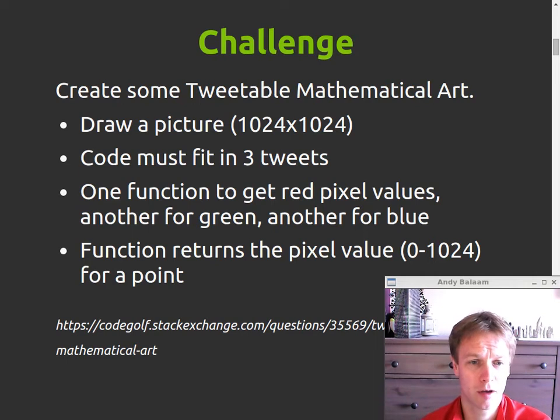So the challenge was part of the Code Golf Stack Exchange website. It was to make a piece of art using code that fits into three tweets. So basically you need to draw a picture that's 1024 square pixels and the code is to fit into three tweets. There's basically one tweet per function. You get one function for each color so you can do a red function, a green function, a blue function and then the computer renders the pixel based on those three values, red, green and blue.